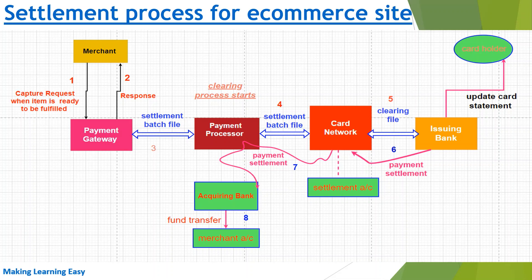After the card network receives the settlement amount, it transfers the settlement amount to the acquiring bank via the payment processor — step number seven. After the acquiring bank gets the settlement amount, it transfers the settlement amount to the merchant account. The issuing bank also updates the account statement of the cardholder and updates the credit card payment in the statement which the customer needs to pay. The entire settlement process from step one to eight normally takes two to three days, so after two to three days the merchant gets the payment in the merchant account.